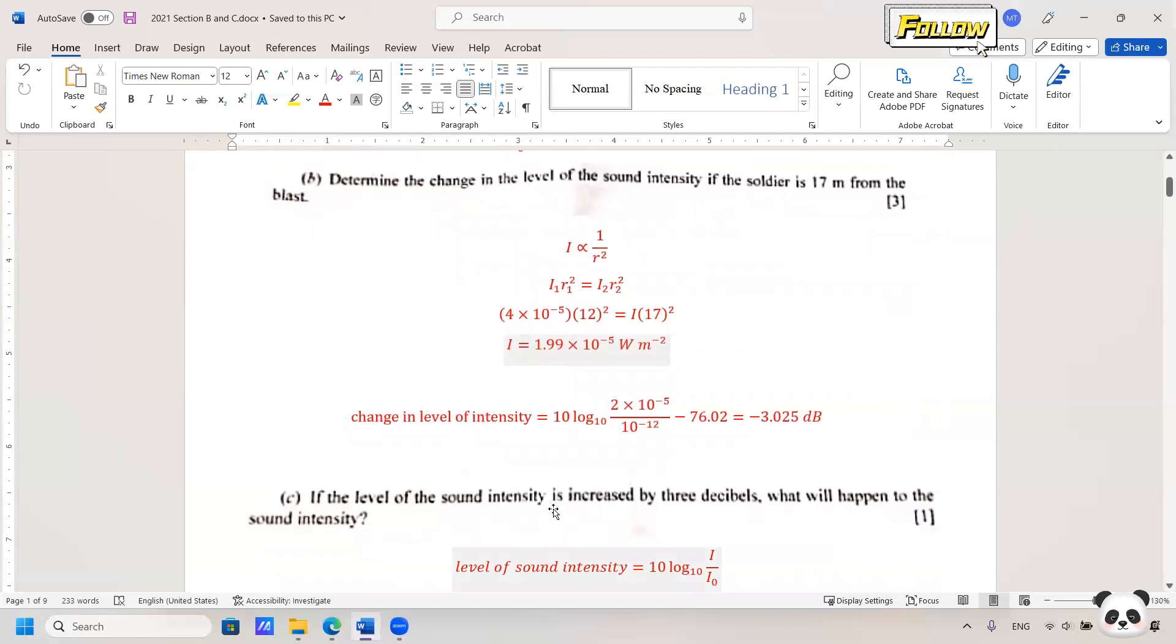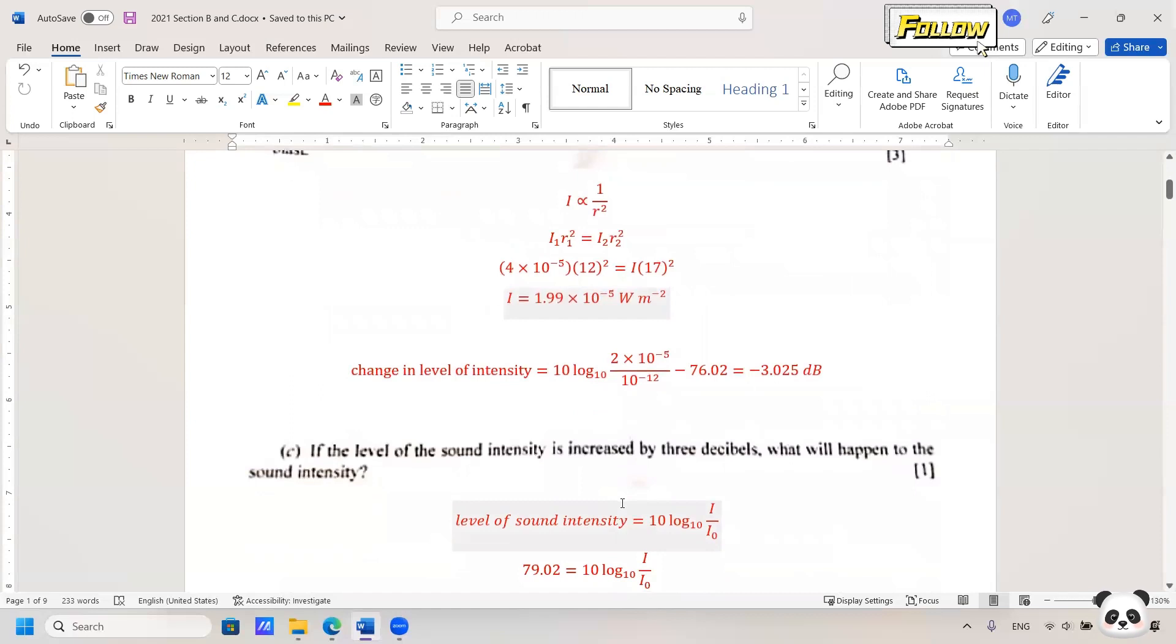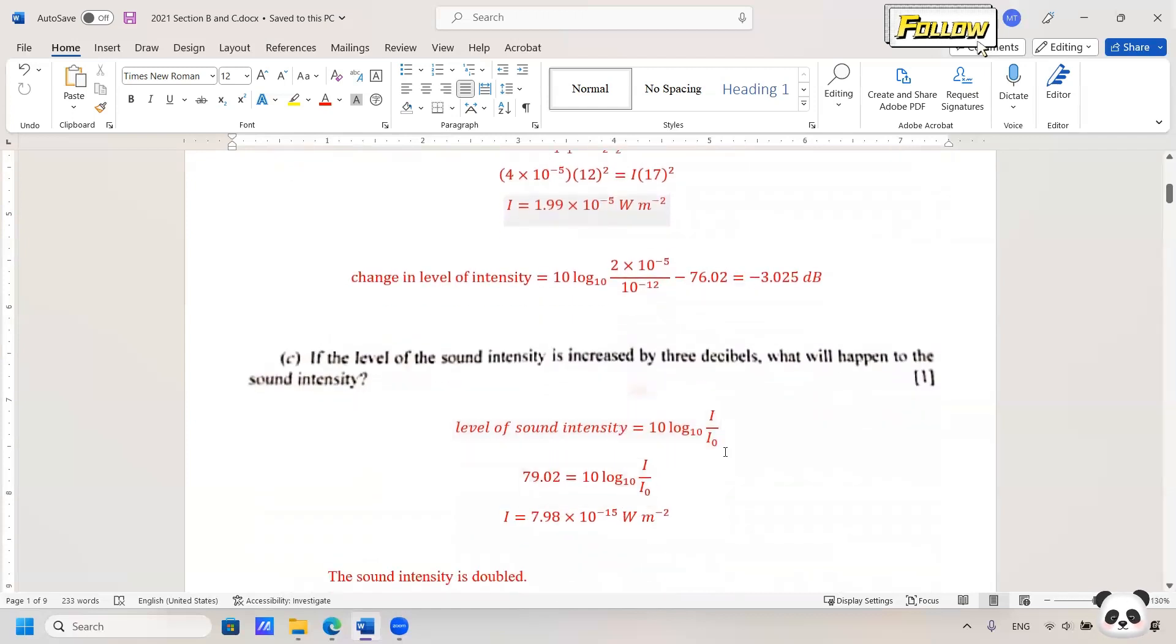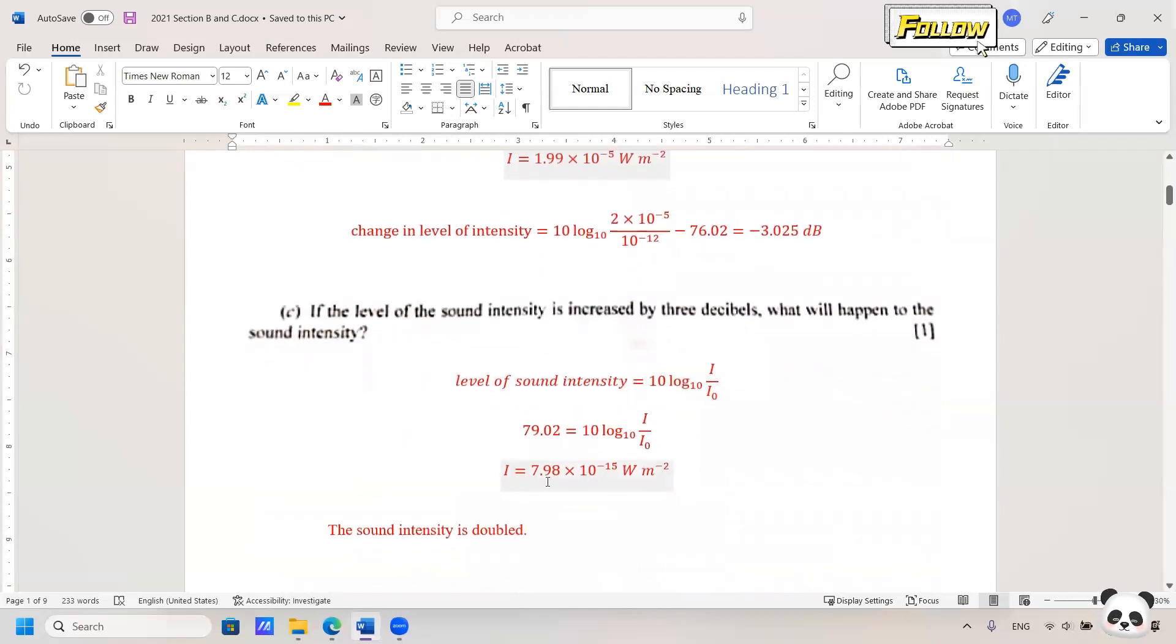So if the level of the sound intensity is increased by 3 dB, what will happen to the sound intensity? Basically, you can try to draft up the calculations, and it is about 8 times 10 to the negative 15 watt per meter squared. You can mention that the sound intensity is increased, of course, but maybe we can also try to give a more specific description that the sound intensity is doubled.